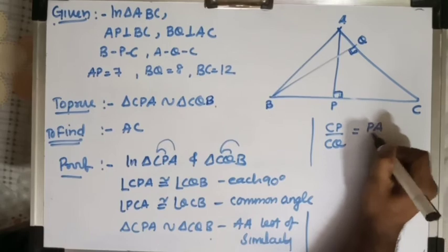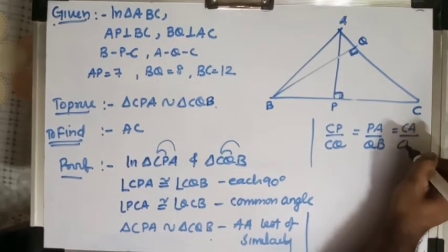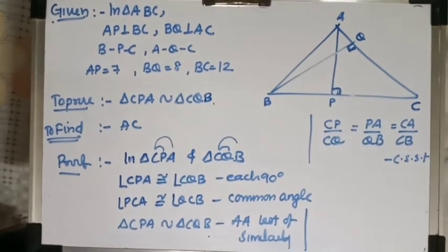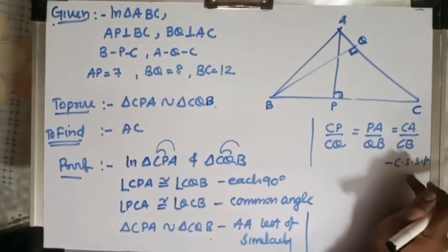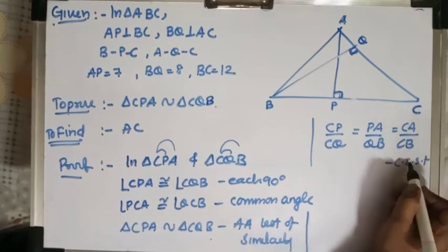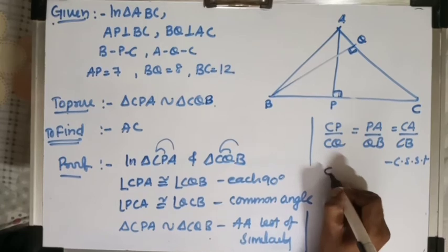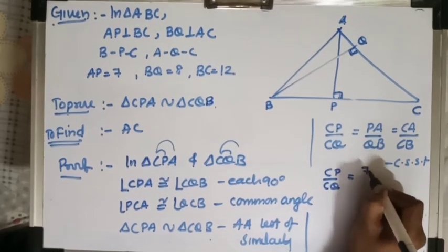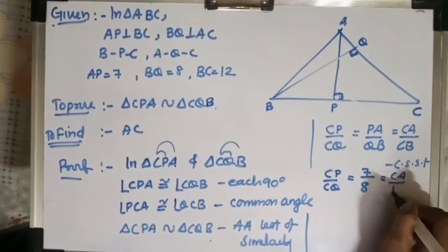Using the proportion CA upon CB equals PA upon QB: substituting values, PA is 7, QB is 8, and CB is 12. So CA upon 12 equals 7 upon 8. Therefore CA equals 7 times 12 upon 8, which equals 84 upon 8, giving CA equals 10.5.